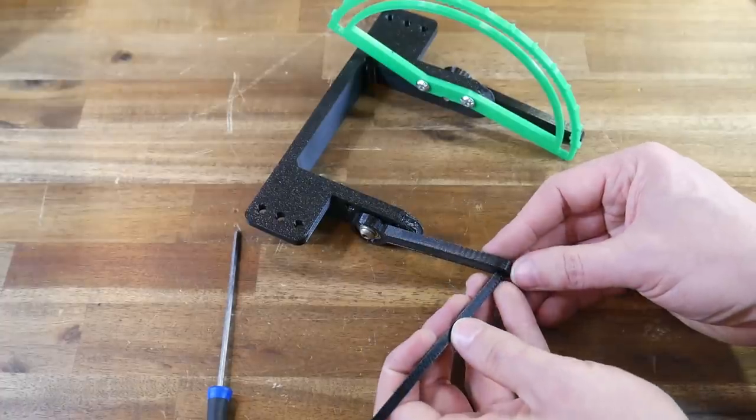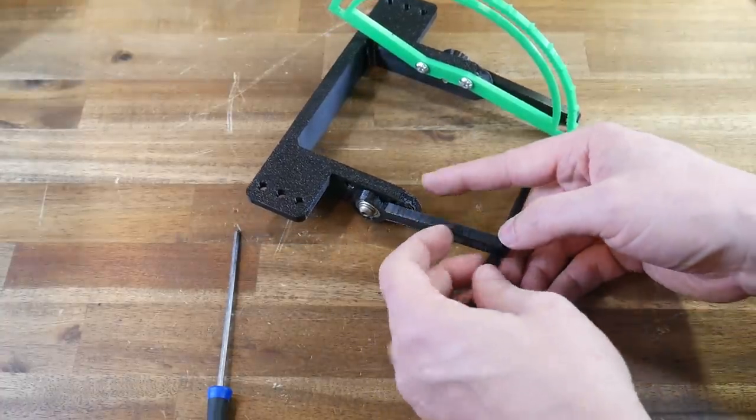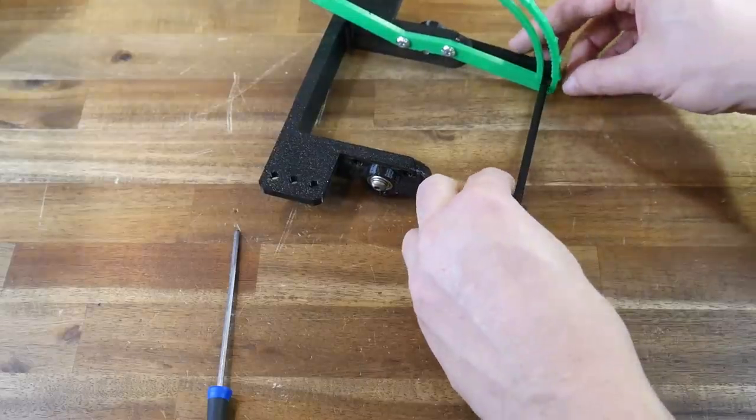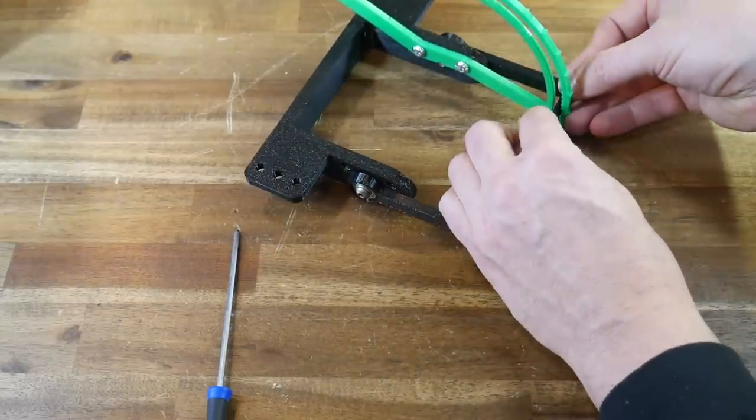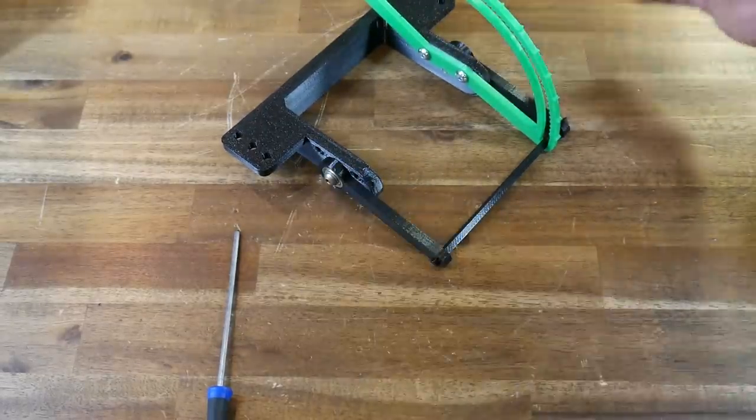Finally, we take the swivel bar, and make sure the pointiest side is again facing up, and slide it through the cutouts in the swivel arm, through the cutout in the angle dial, and then through the cutout in the opposite swivel arm. A dab of superglue can be used to hold this in place if required.